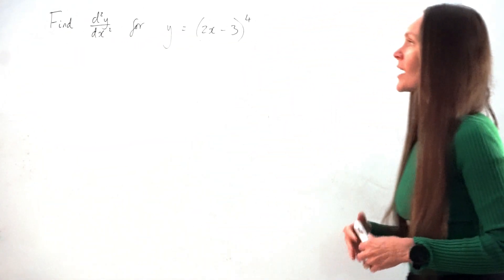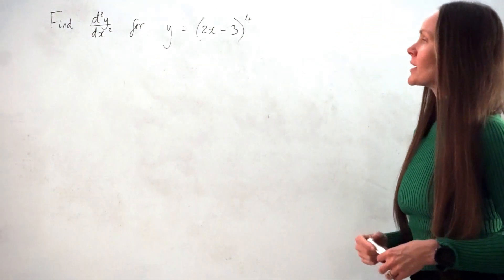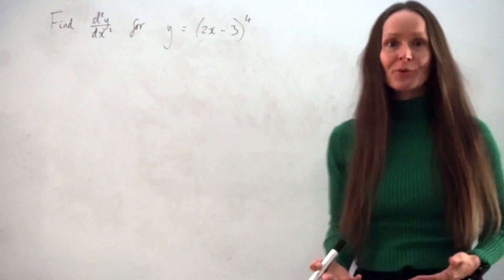So in this question, we have to find d²y/dx² for y = (2x - 3)⁴.